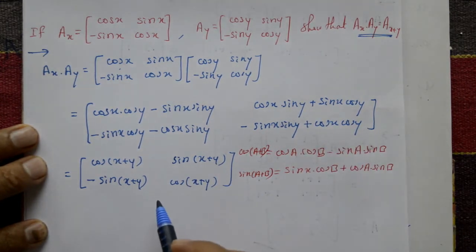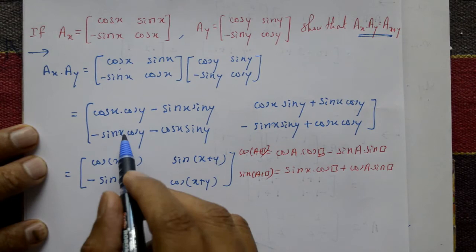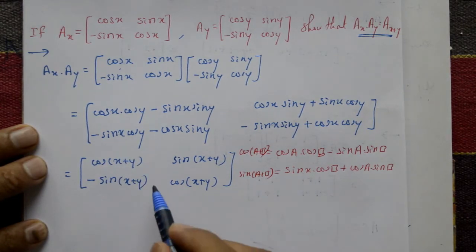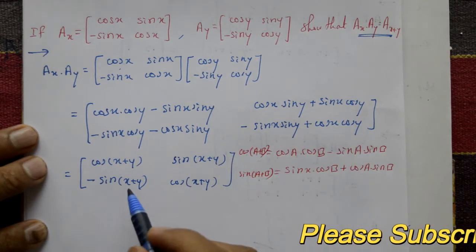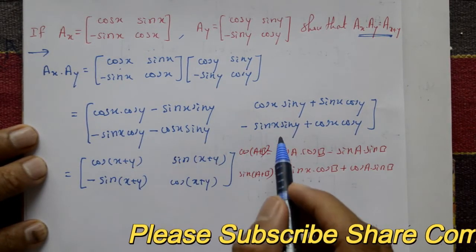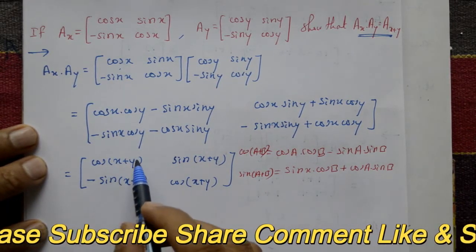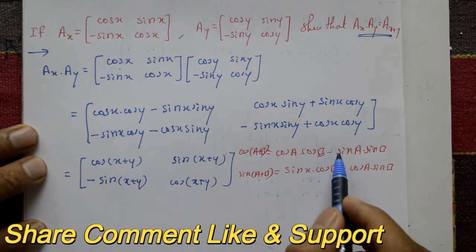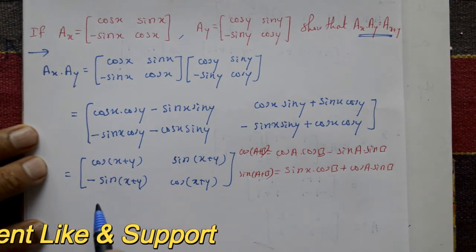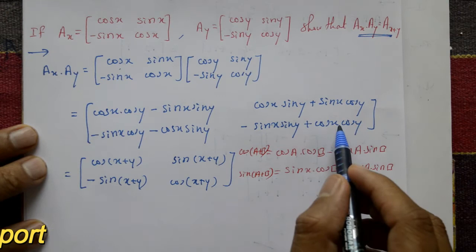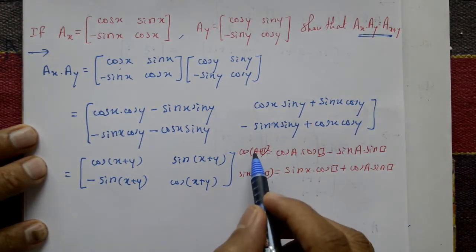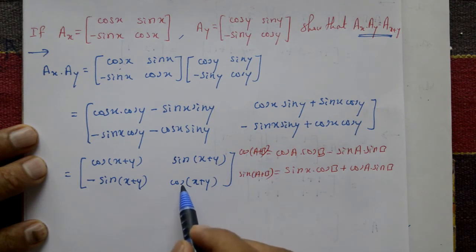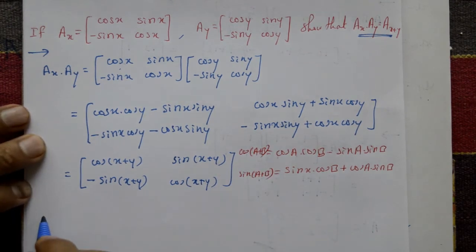Applying these two formulas to the elements: for the first element, cos x into cos y minus sin x into sin y gives cos(x plus y). The minus becomes plus for the diagonal element. So we get cos(x plus y) in both diagonal positions.